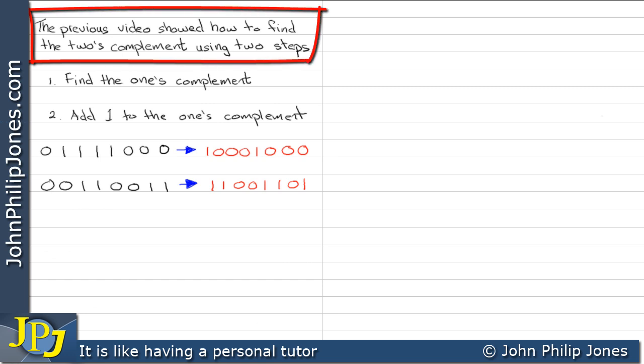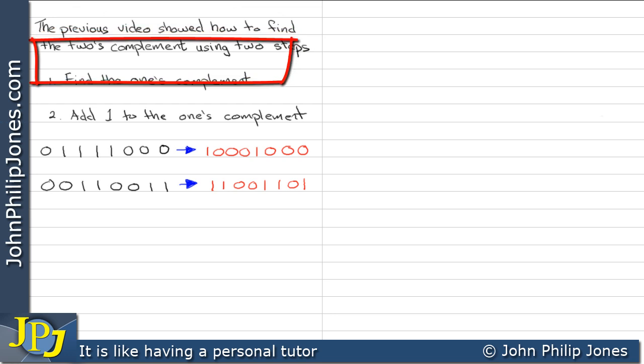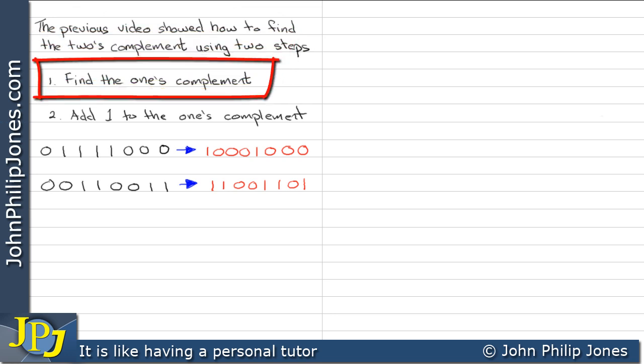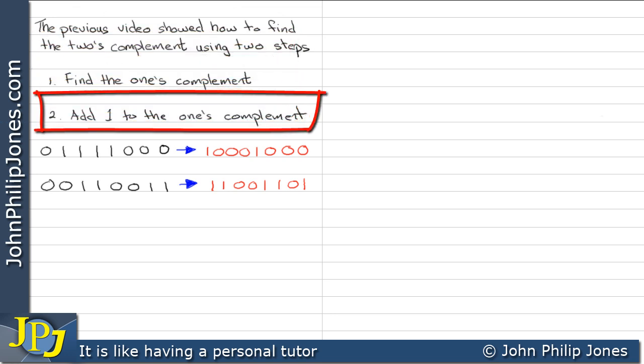The previous video shows how to find the 2's complement using two steps. Step 1, you find the 1's complement of the number you're given. Step 2, you add 1 to this 1's complement, and then you end up with the 2's complement.